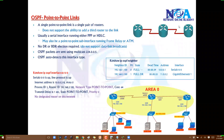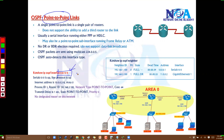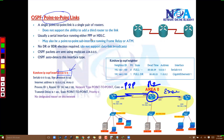Next we'll look at OSPF on point-to-point networks. Previously we saw OSPF on broadcast networks, where DR and BDR elections occur. But when running point-to-point links — such as serial interfaces — there is no DR or BDR election, because in a point-to-point link there is no broadcast. When an update is sent on an interface, the other router will not send it back on the same interface.